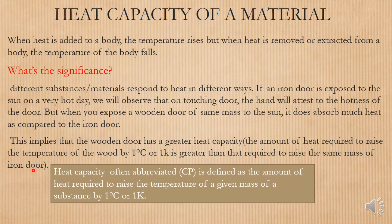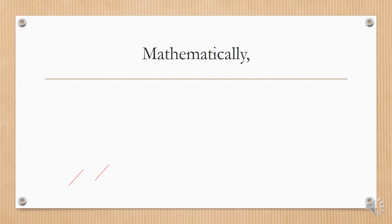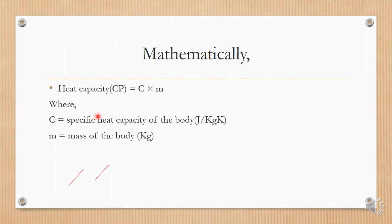Heat capacity, often abbreviated as CP, is defined as the amount of heat required to raise the temperature of a given mass of a substance by one degree Celsius or one Kelvin. Mathematically, heat capacity CP is equal to c times m, where c is the specific heat capacity of the body in joules per kilogram per Kelvin and m is the mass of the body in kilograms.